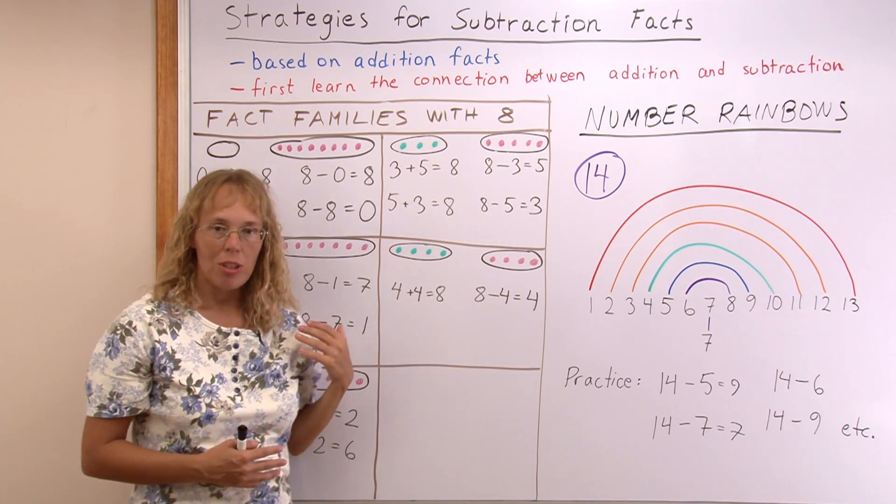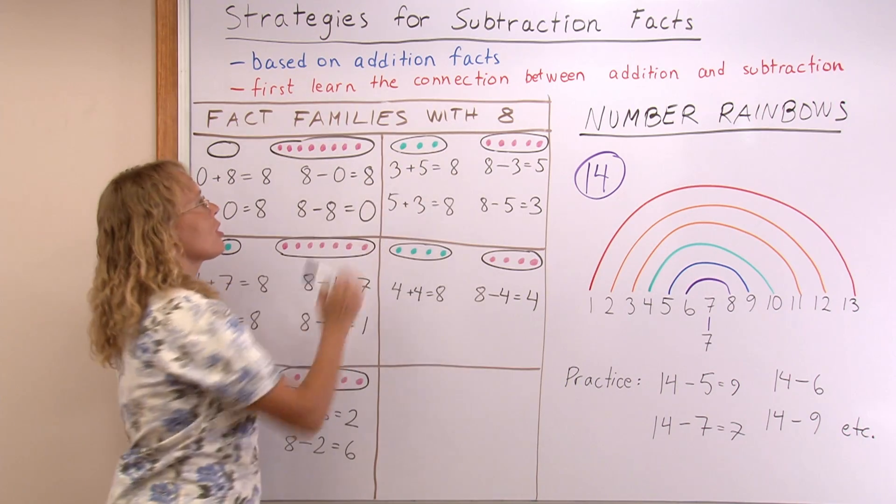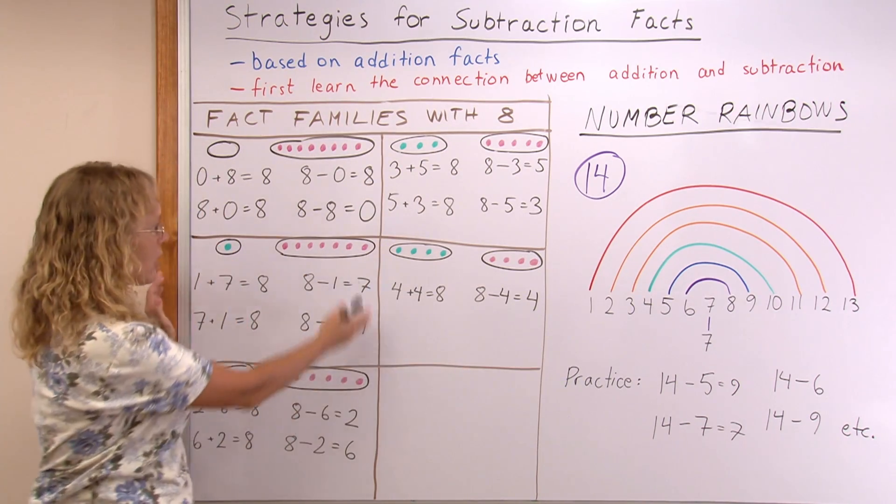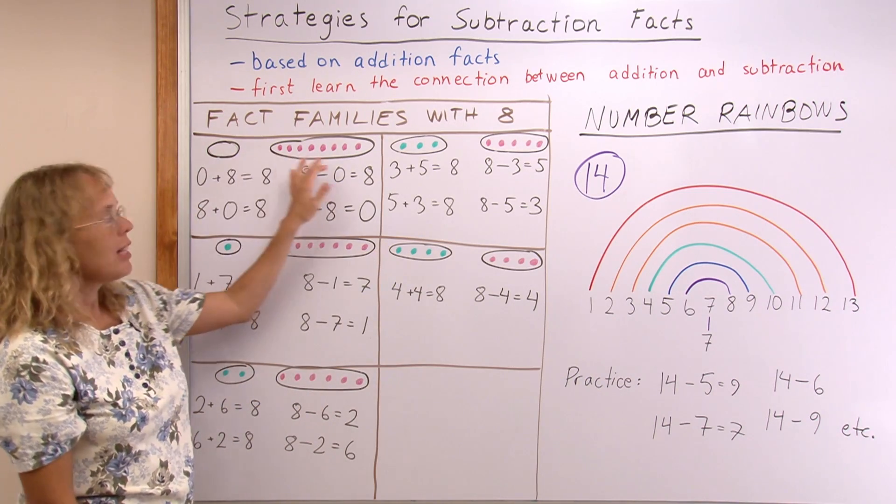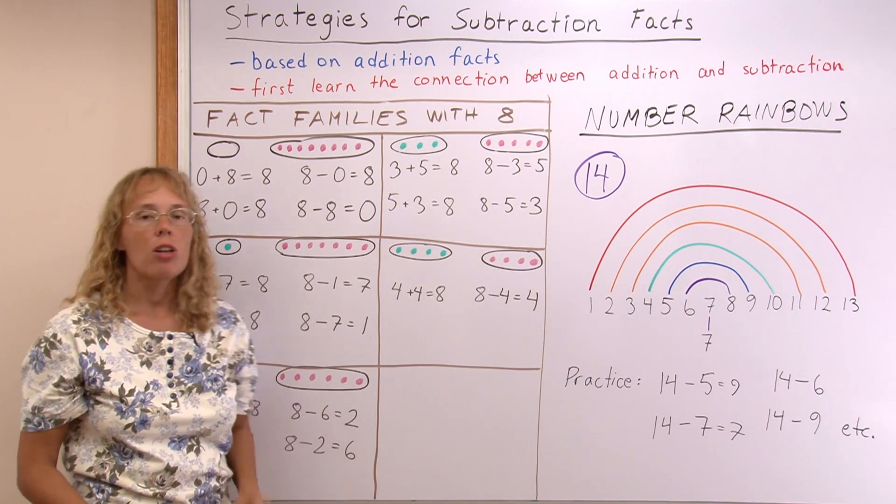Then it's time to learn all the fact families for a certain number, such as 8. And in each box here I have one fact family, and the first one has 0 and 8. And then here's 1 and 7, and here's 2 and 6, and so on.